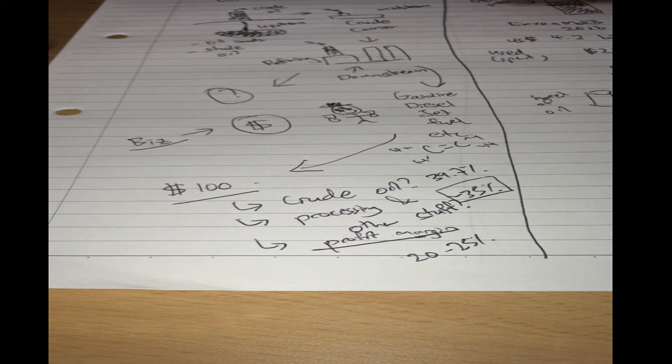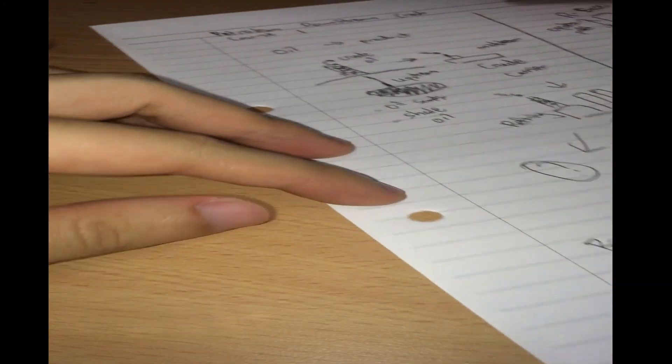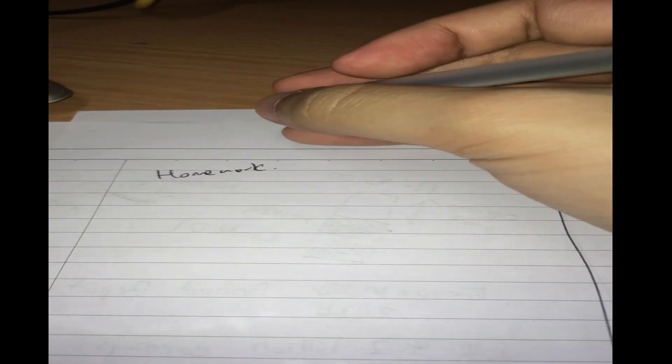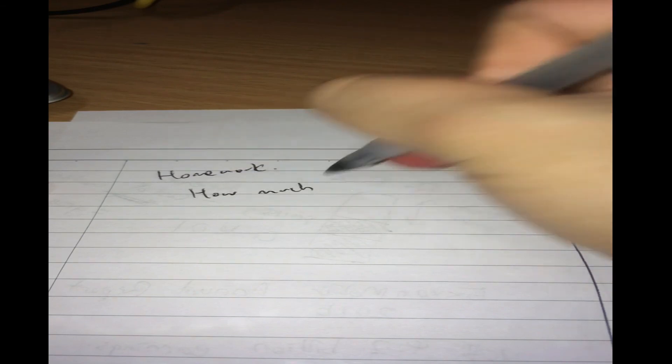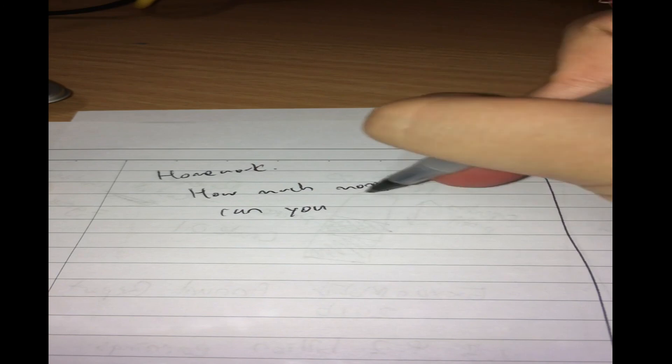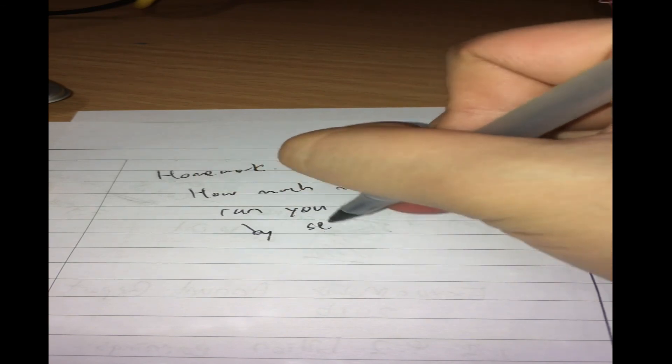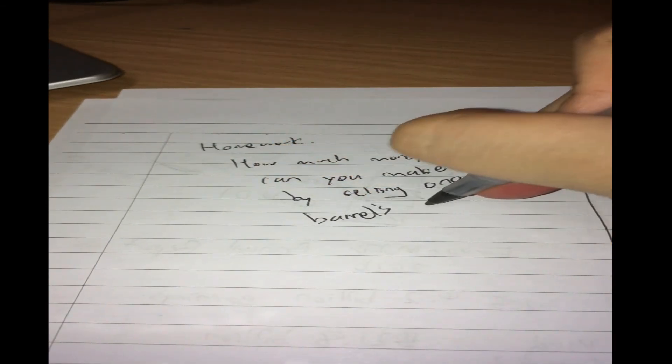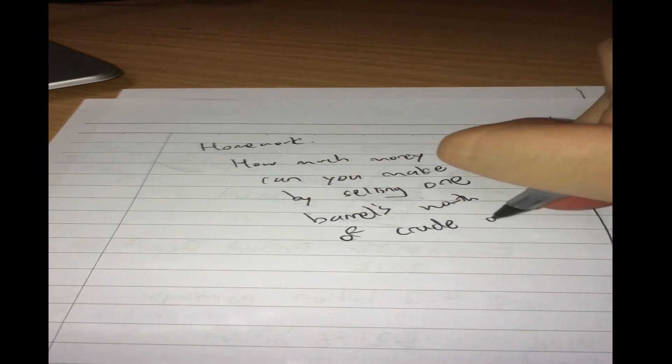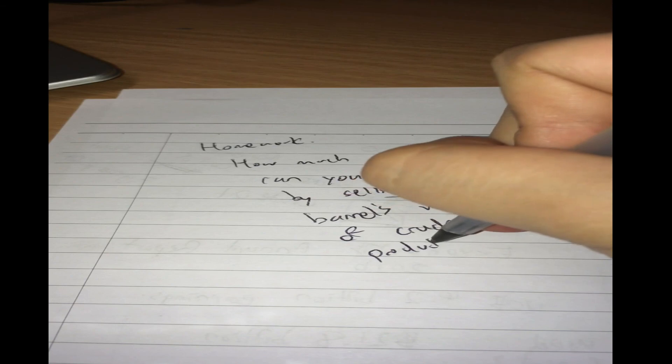So, I am going to see you again for the next video. And, one homework for you. Homework. How much money can you make by selling one barrel's worth of crude oil products? Now, my estimate was $125.84. Alright. That was my estimate. Now, I want you to go and come up with your own estimate.